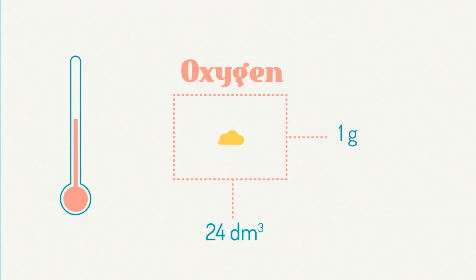Therefore, one gram of oxygen gas at room temperature occupies a volume of 24 divided by 32 decimetres cubed. And so, 4 grams of oxygen gas at room temperature occupies a volume of 4 times 24 over 32 decimetres cubed, or 3 decimetres cubed.